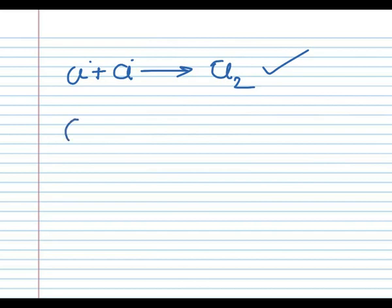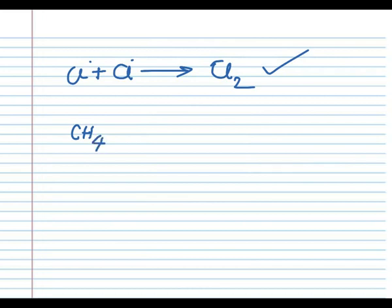The next one. Methane plus Cl free radical. In this reaction, the free radical is converted into a proper compound. But the lone pair is transferred to another molecule. In this case, it will form Methyl free radical and HCl.